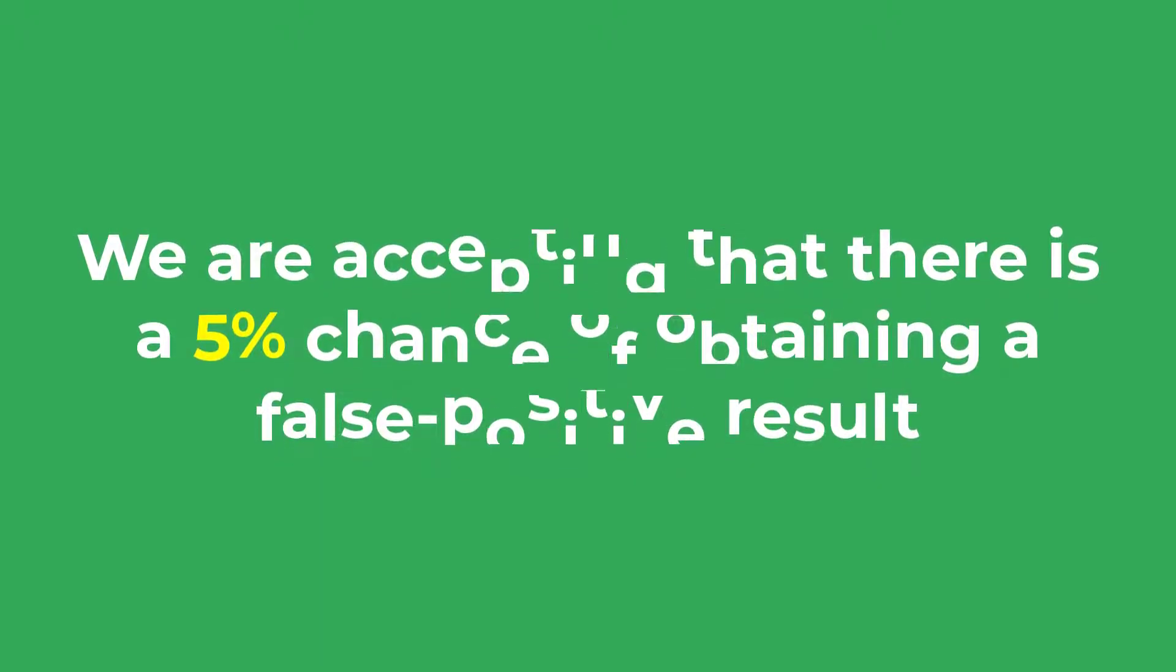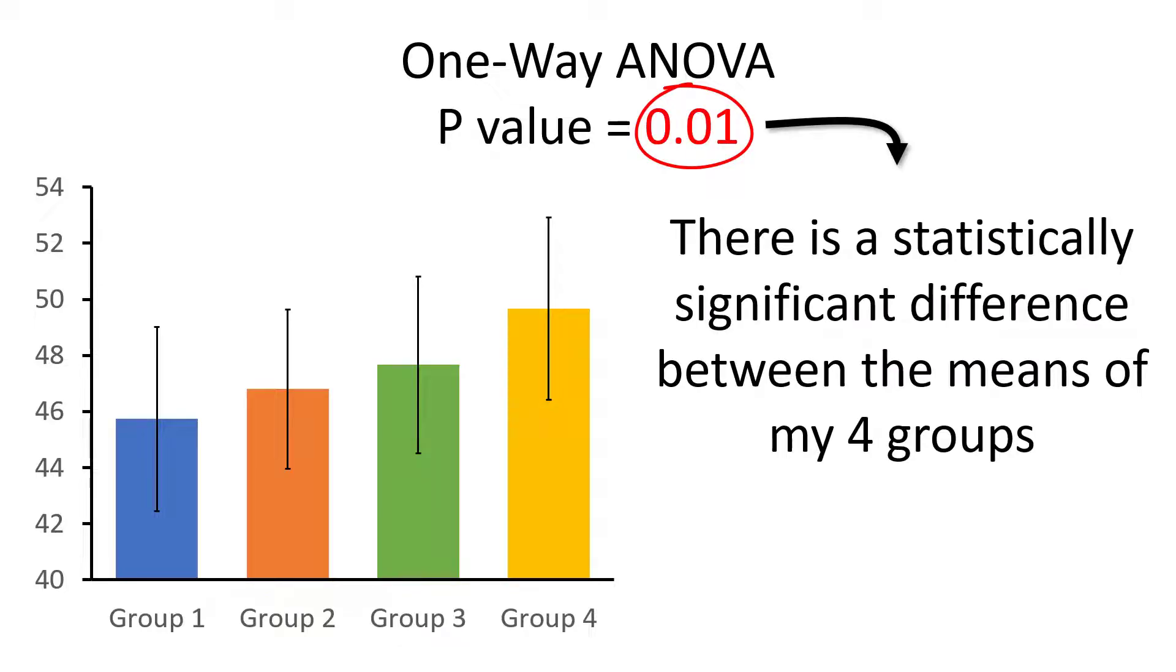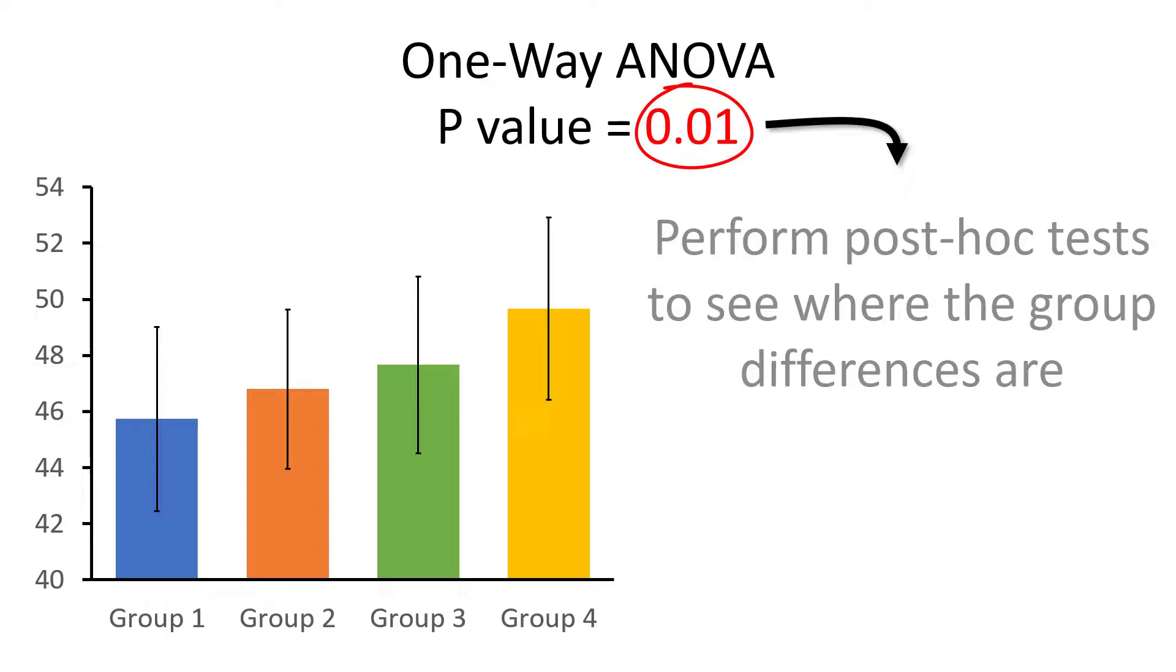Now let me give you a different example. Say we have an experiment where we compared the means of 4 groups using a one-way ANOVA test using an alpha level of 0.05. The p-value for this test was 0.01. Therefore there is a statistically significant difference between the means of my four groups. The next step is to perform what are known as post hoc tests to see which group is different from the rest.